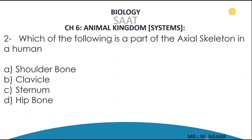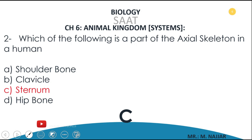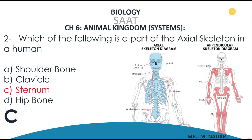Question number two: which of the following is a part of the axial skeleton in a human? A) shoulder bone, B) clavicle, C) sternum, D) hip bone. The answer is C — sternum. The sternum is also referred to as the breast bone. The axial skeleton is made up of the skull, vertebral column, rib cage, and the sternum or breast bone.